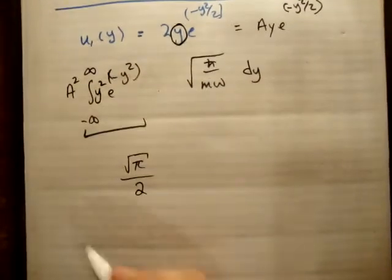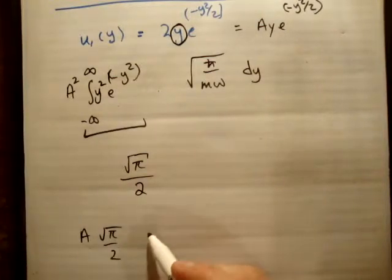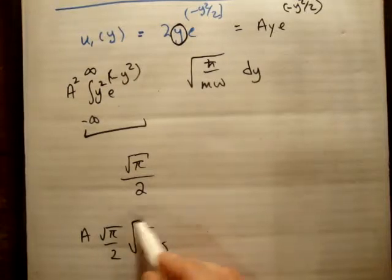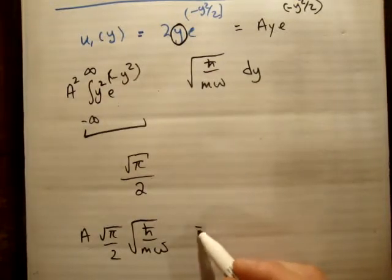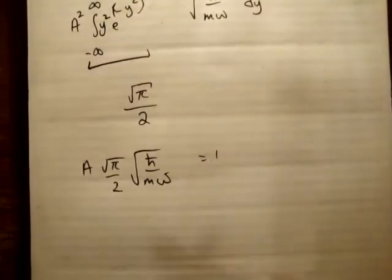So that means what we're left with is A times the square root π over 2 times the h bar over m omega square root. And that's equal to 1.